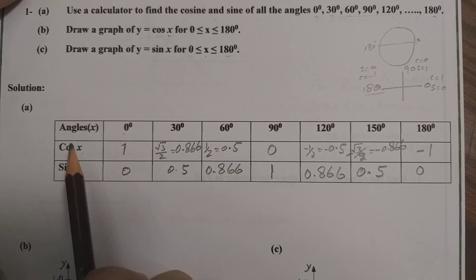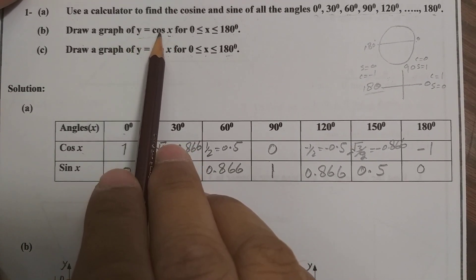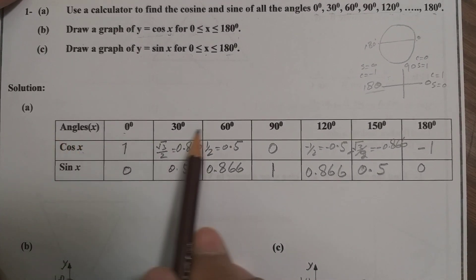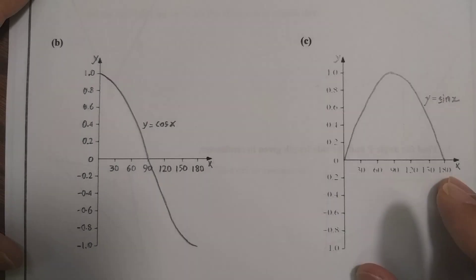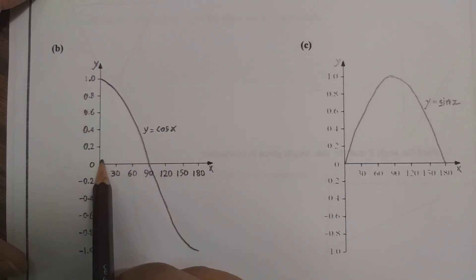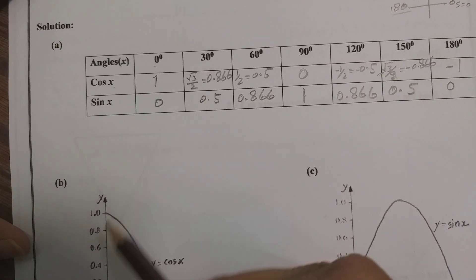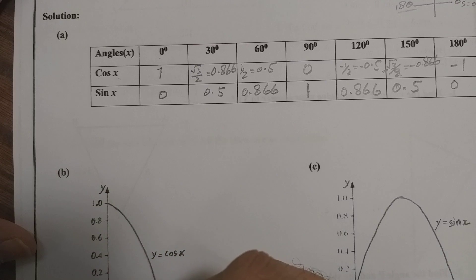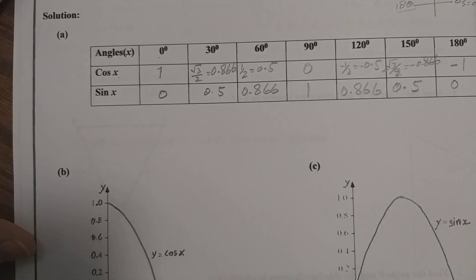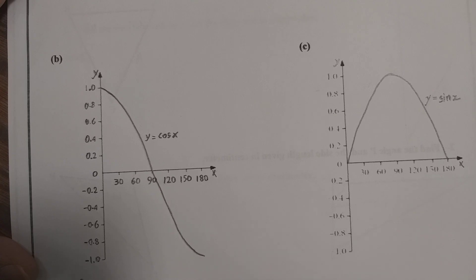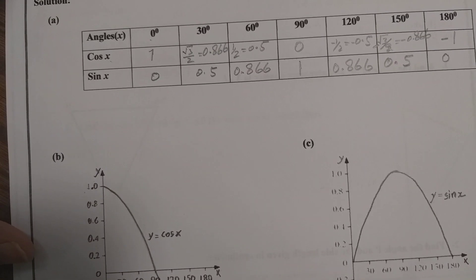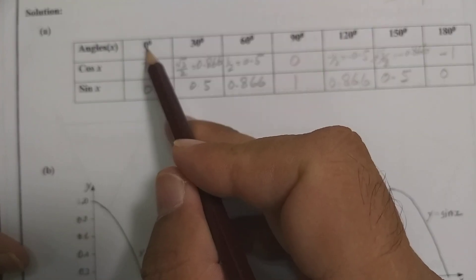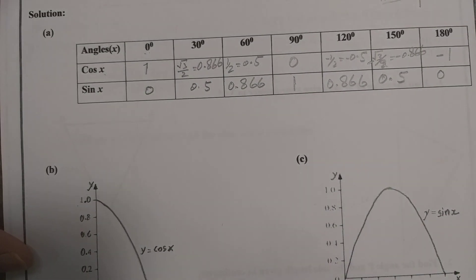In part B, draw the graph of y = cos x. These are the angle values and these are the values we need to plot. Note that the cosine value on the y-axis starts at 1 when the angle is 0. Remember: cosine and sine values are always between -1 and 1. The angles go on the x-axis.